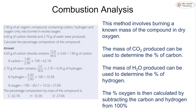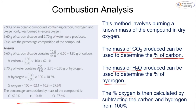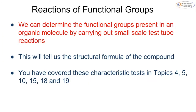Combustion analysis, covered back in topic 1, involves burning a known mass of a compound in dry oxygen. We use the mass of CO₂ to determine the percentage of carbon, the mass of water to determine the percentage of hydrogen, and the percentage of oxygen is found by subtracting carbon and hydrogen. If you can't remember how to do this, have a look back at topic 1 — we don't want to spend too much time on things already covered.